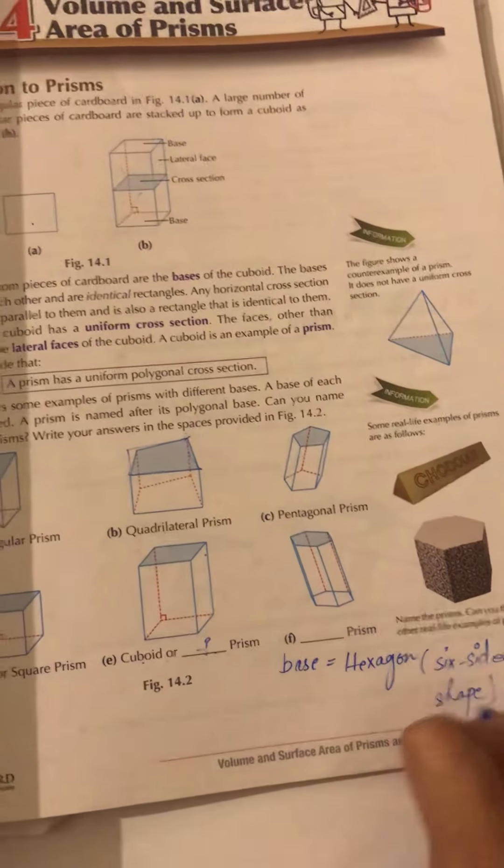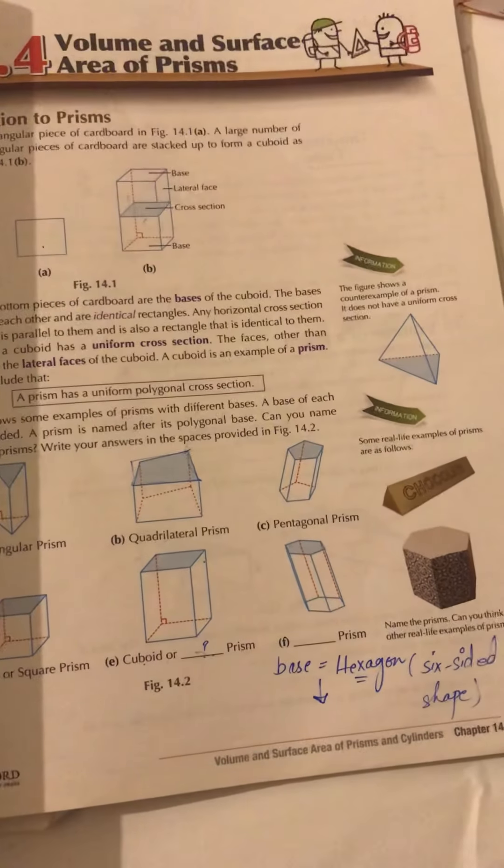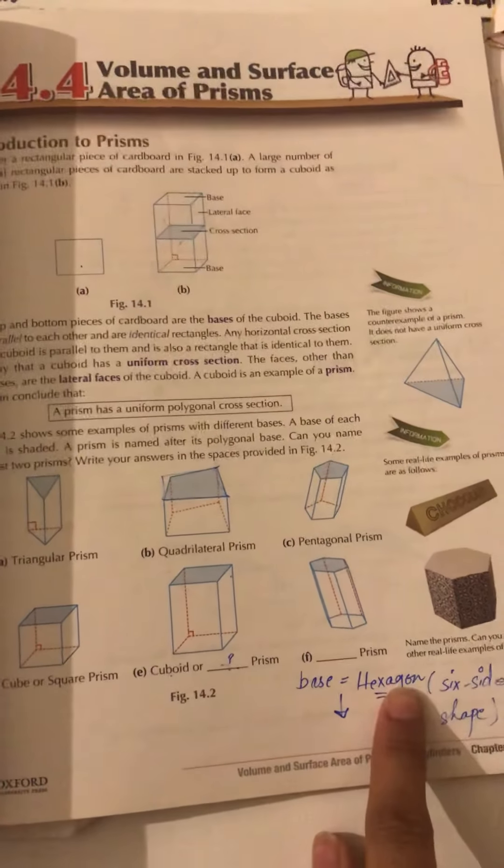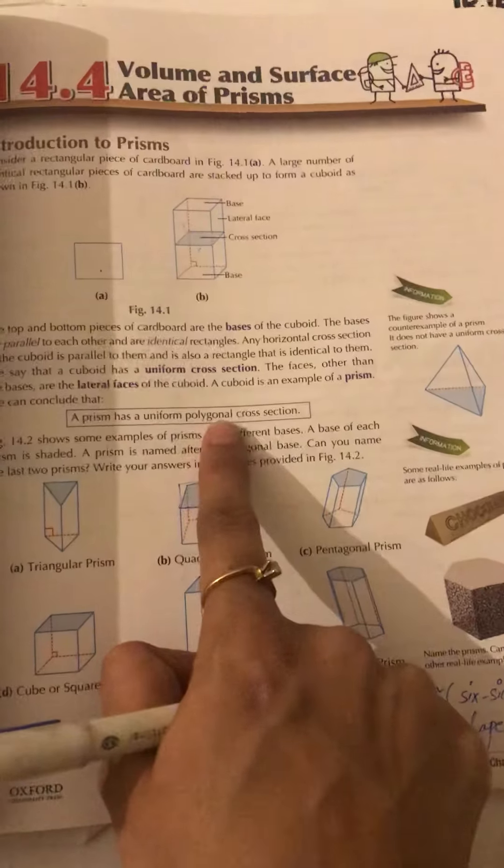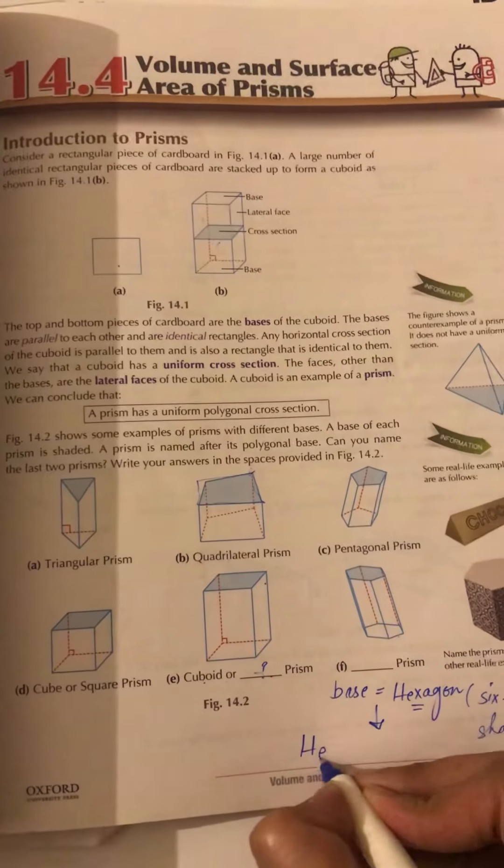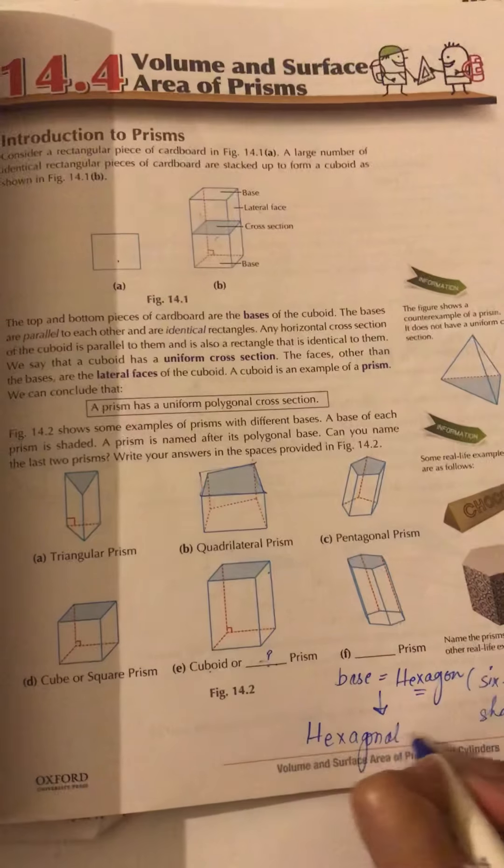So the name will be derived from this hexagon. Or hexagon is a polygon, right? So as it has a uniform polygonal cross section, so the name of this prism is derived from this base - hexagonal prism.